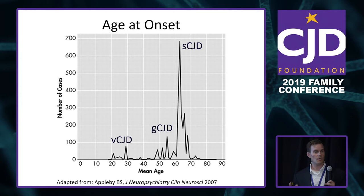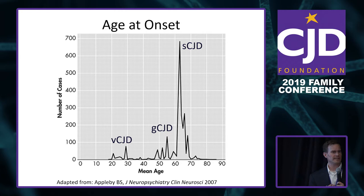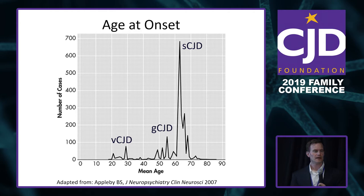It's important to remember that age alone cannot determine the diagnosis. A lot of times people say someone might have genetic CJD because they're 45 or 50, but you really can't base that diagnosis off of age alone because there's so much variability.